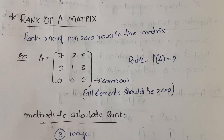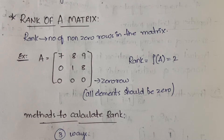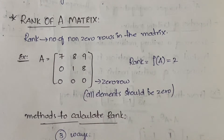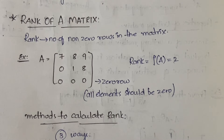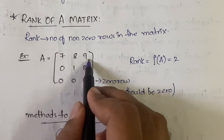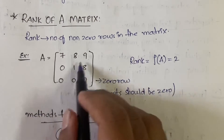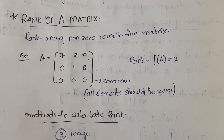Basically, what do you mean by rank? Rank is nothing but the number of non-zero rows in a matrix. In a given matrix it can be of any order — it is not mandatory that you calculate rank only for a square matrix. You can calculate rank for any type of matrix. So the number of non-zero rows in a matrix is called the rank of a matrix. For example, you have a matrix like: 7, 8, 9 / 0, 1, 8 / 0, 0, 0.